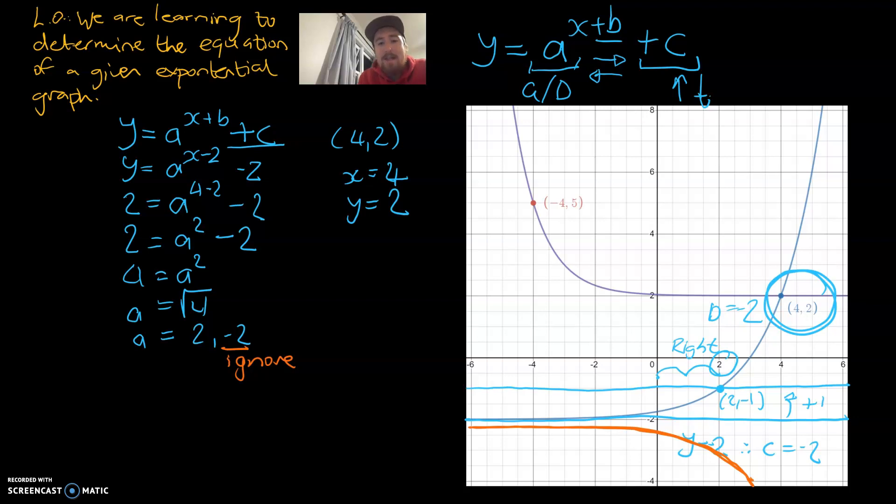Okay, and that means we can then finish up our answer for the first one. Y is going to be equal to 2 to the power of x minus 2 minus 2. So a whole bunch of 2s in that question which I did deliberately. Awesome. So that was the answer to the first one.